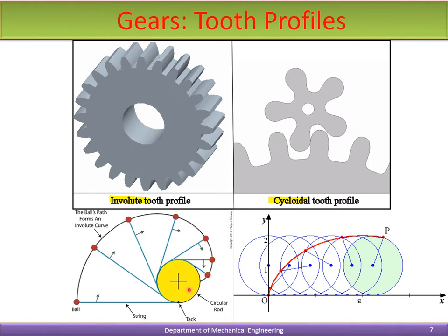For the involute profile: assume you have a round rod with a string wound around it. As you unwind the string, holding its tip, it traces a path — that path is called an involute curve. If the tooth has that particular type of profile, it is called an involute tooth profile.